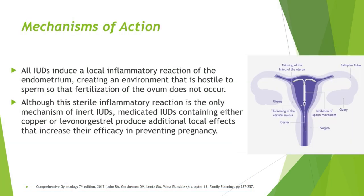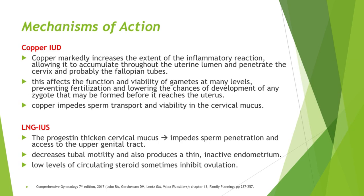The mechanism of action of IUDs — whether Mirena or copper — is that all IUDs induce a local inflammatory reaction of the endometrium, creating an environment that is hostile to sperm so that fertilization of the ovum does not occur. The mechanism of action is mostly a local inflammatory reaction, not a barrier. In the copper IUD, copper markedly increases the extent of this inflammatory reaction, allowing it to accumulate throughout the uterine lumen and penetrate the cervix and fallopian tubes, affecting the function and viability of gametes, preventing fertilization, and lowering the chances of any zygote developing before it reaches the uterus.